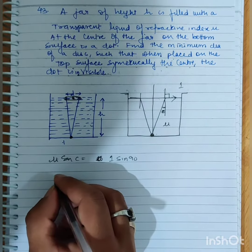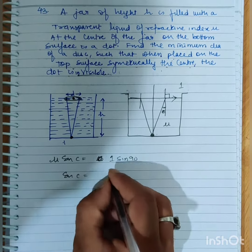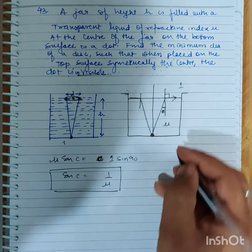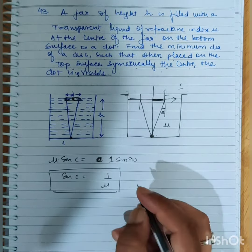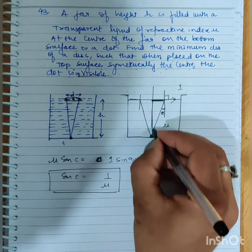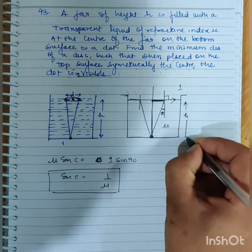Sine c equals 1 by mu. If we get this radius and multiply by 2, we get the diameter. We already have h, so we need tan c.